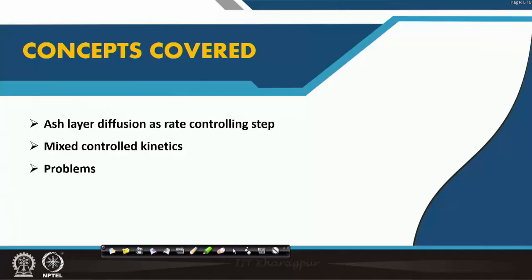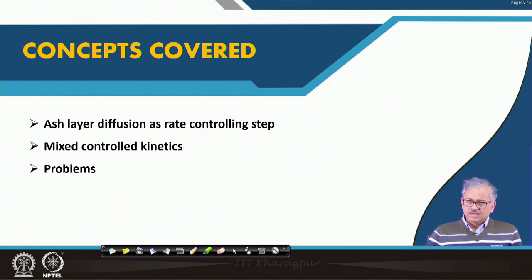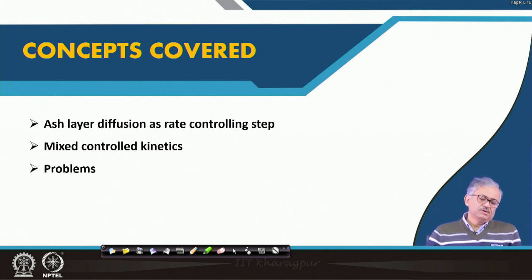Today in this lecture, we will discuss if mass transfer through the ash layer is rate controlling. The concept to be covered is ash layer diffusion as the rate controlling step. We will also discuss the mixed control situation — that means if all resistances like mass transfer through the film, diffusion through the ash layer, and chemical kinetics at the unreacted core interface are comparable, the system will be mixed control. Finally, we will discuss two problems related to iron oxide reduction.